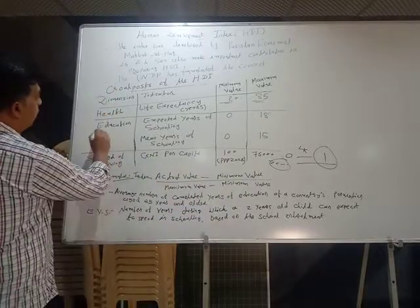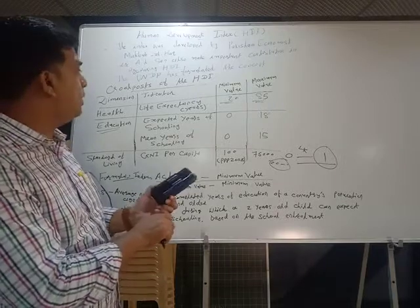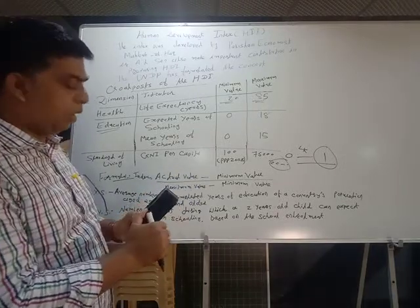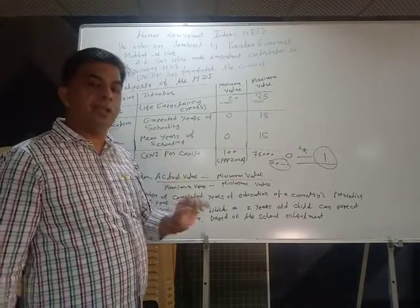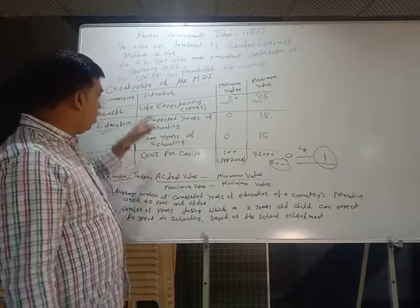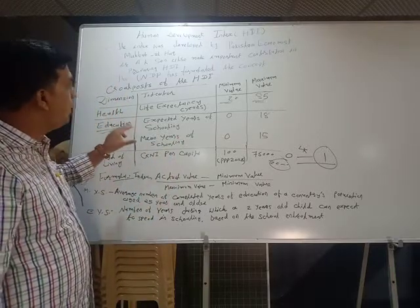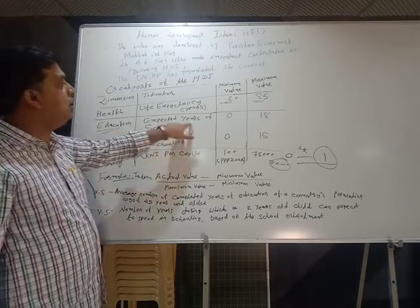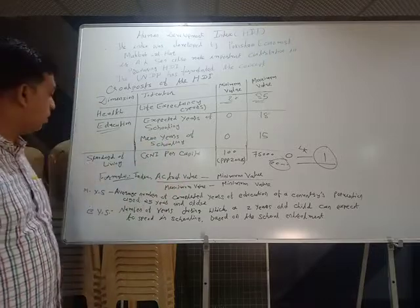Second and very important: education. In the old method, there were two criteria: gross enrollment ratio and adult literacy ratio. After 2010, these two new indicators have been introduced: expected years of schooling and mean years of schooling.